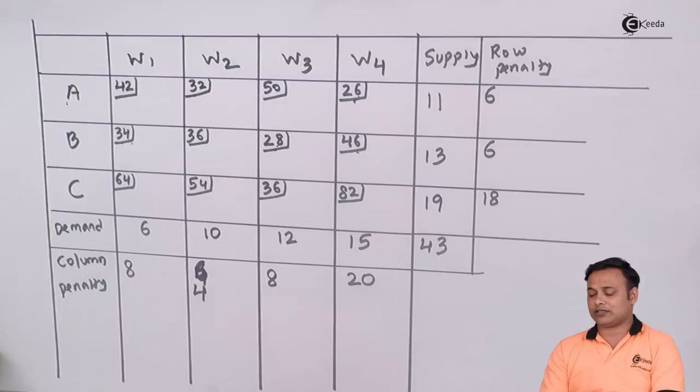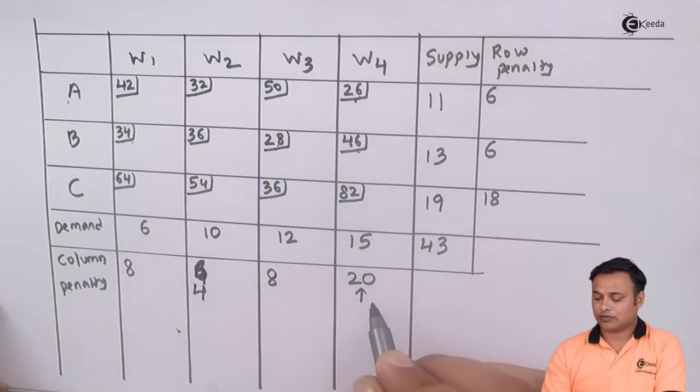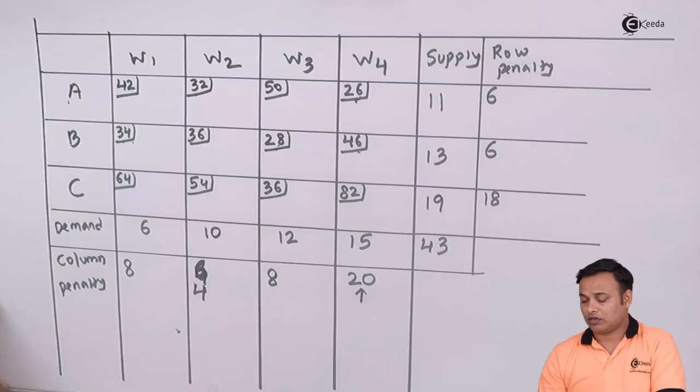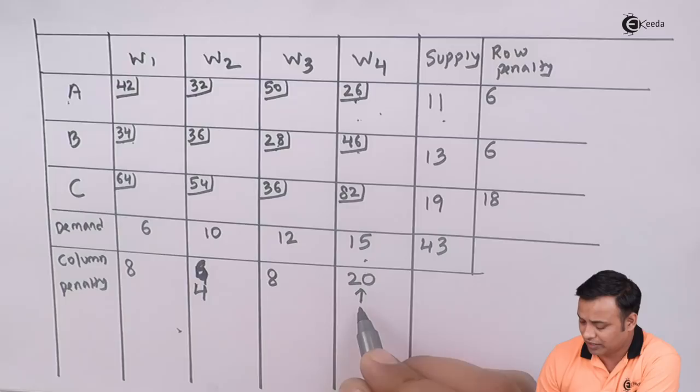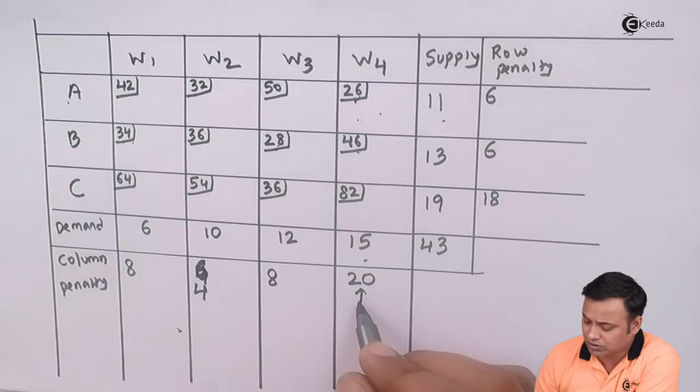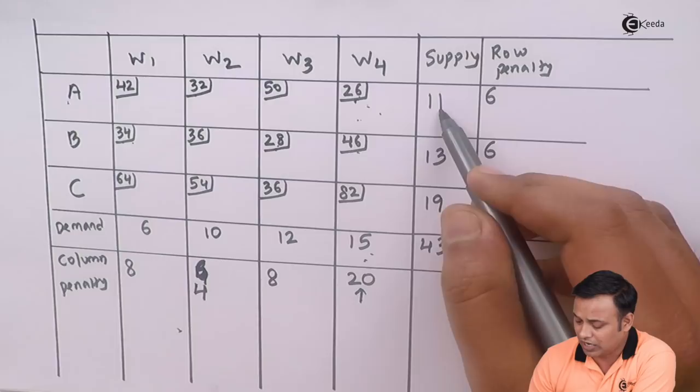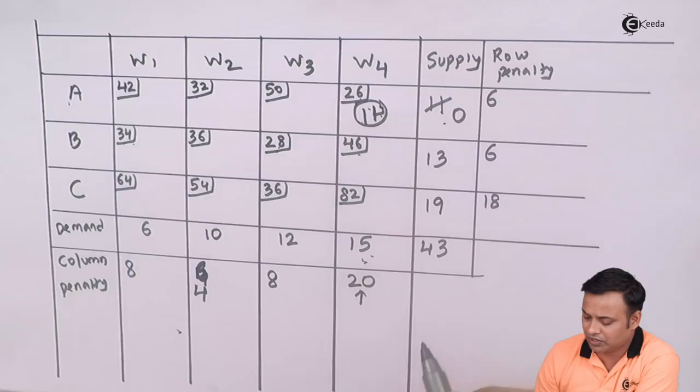Now select the highest penalty among the row and the column penalties. We will see that the highest penalty comes to 20. What is the lowest cost in this particular column? I have got 26 as the lowest cost where my supply is 11 and my demand is 15. Whichever is less, it will be 11. 11 minus 11 I will write 0 here, 15 minus 11 it will be 4.